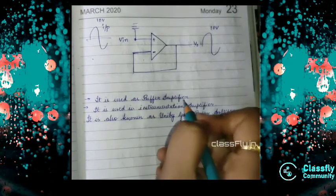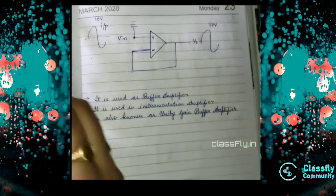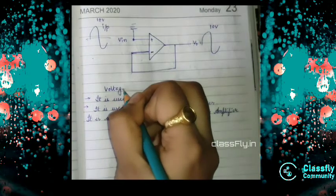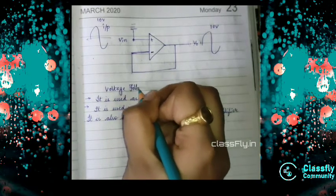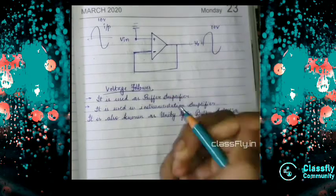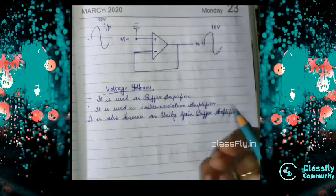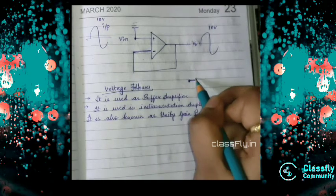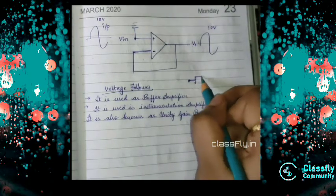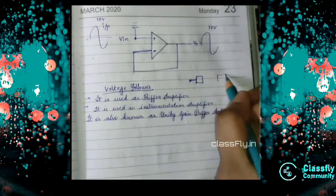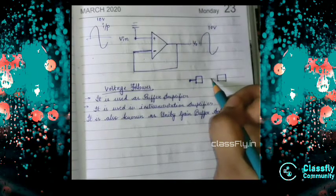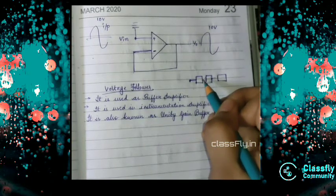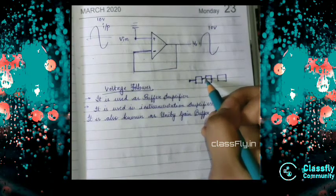Now see the uses of the voltage follower. Voltage follower can be used as a buffer amplifier. Think that there is a high potential connection which needs to be joined with low potential. As we know high potential can't be joined with the low potential, so we use the voltage follower.